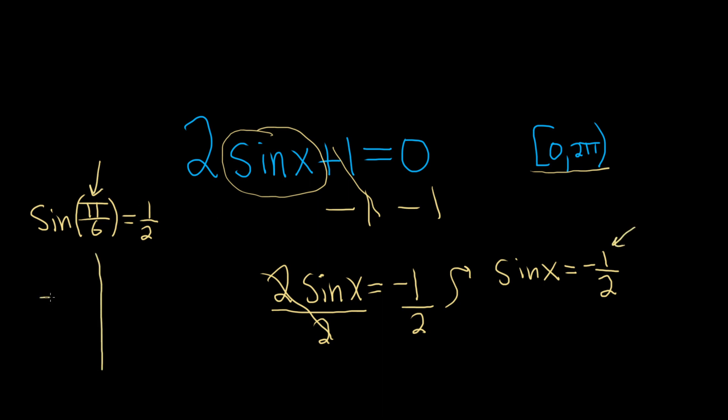If it's going to be negative, remember that sine is the y-coordinate on the unit circle. That means the angle has to be down here, and it has to be down here. So we're looking for angles here, because sine is the y-coordinate on the unit circle. And these are angles whose reference angle is π/6.